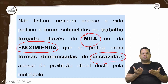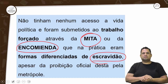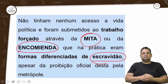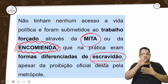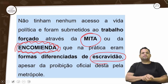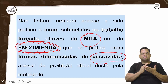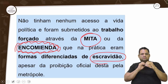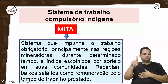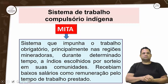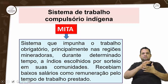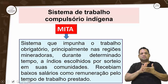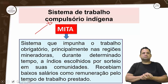A encomenda era quase uma tutela: o indígena ficava sob a tutela de um senhor, que era responsável por dar toda a formação religiosa e social para esse tutelado. O sistema de trabalho compulsório — não é escravidão, mas o trabalho era obrigatório.